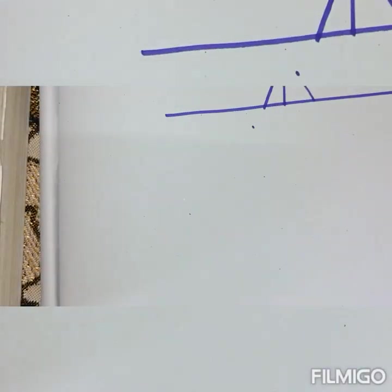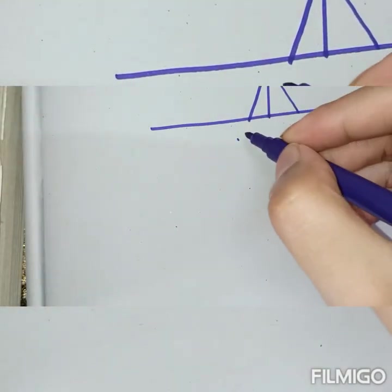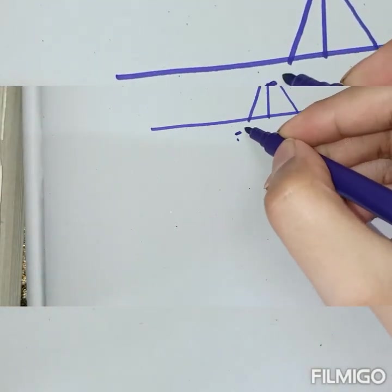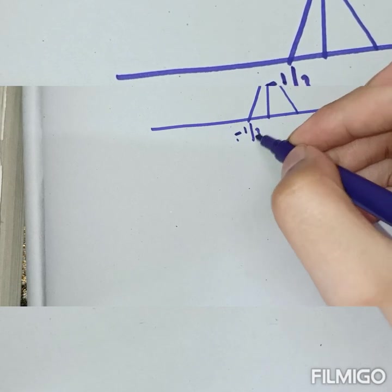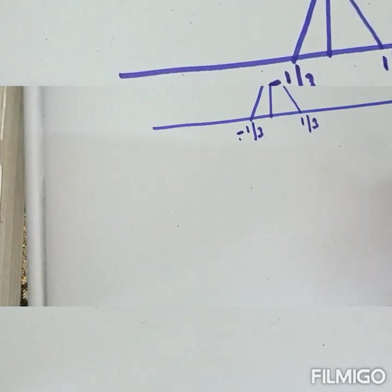Dividing the time period by 3, we get minus 1 by 3 and plus 1 by 3 as the new time boundaries. So x of 3t ranges from minus 1/3 to plus 1/3.